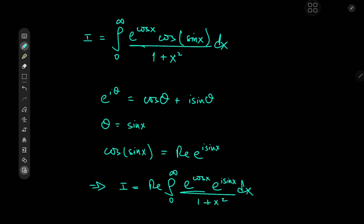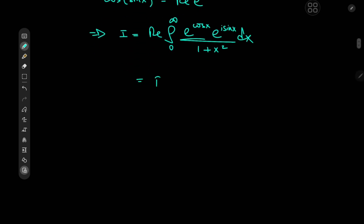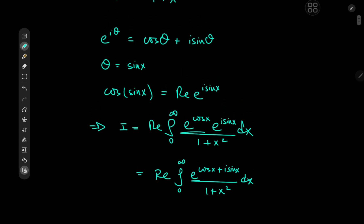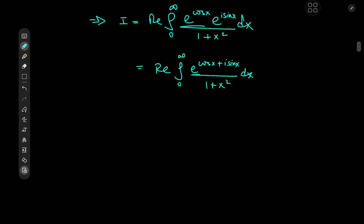We have a couple of exponential terms being multiplied, so their exponents are going to add up. We get the integral from zero to infinity of e to the quantity cosine x plus i times sine x, divided by 1 plus x squared, dx. And by Euler's formula, cosine x plus i times sine x equals e to the ix. So I equals the real part of the integral from zero to infinity of e to the e to the ix, divided by 1 plus x squared, dx.